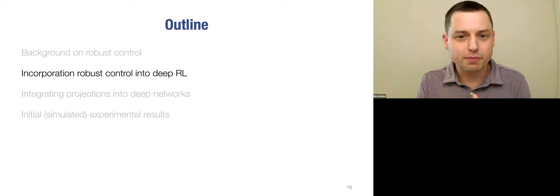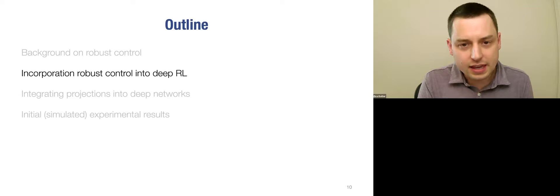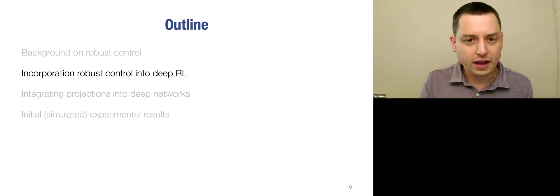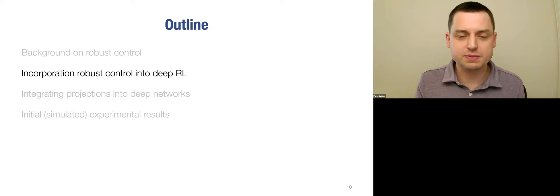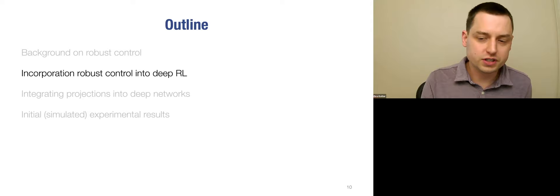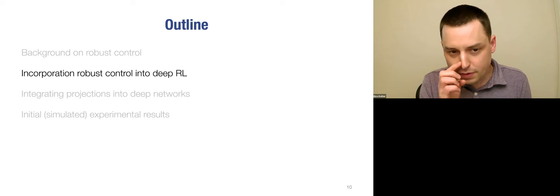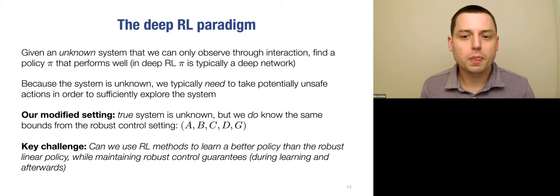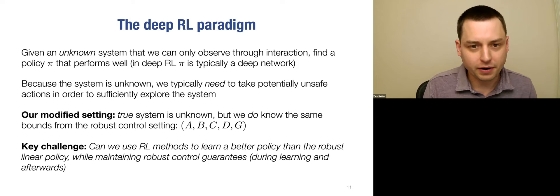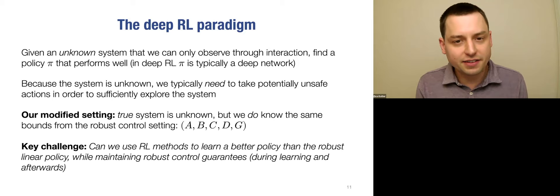How do we merge robust control and deep reinforcement learning? The basic idea is quite simple: we take the output of a deep RL policy and project it to be stable under the same robust control Lyapunov function extracted from normal robust control. We're not going to use standard RL's assumption that the agent has no model — instead we'll assume we know the uncertainty bounds as in traditional robust control.